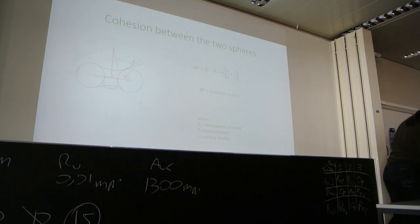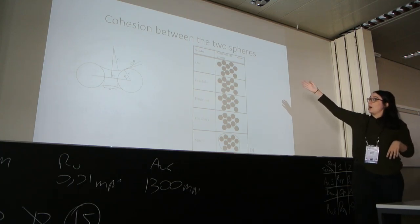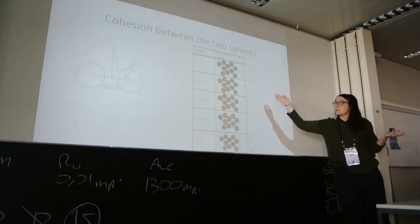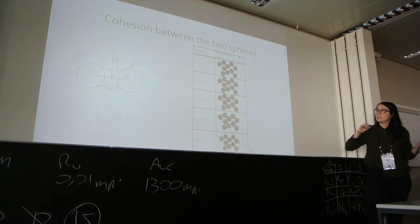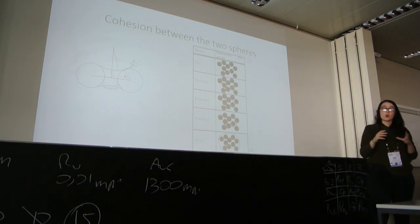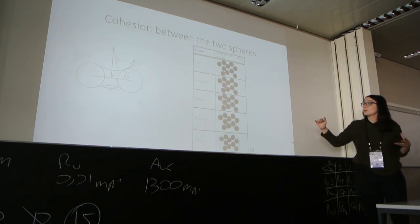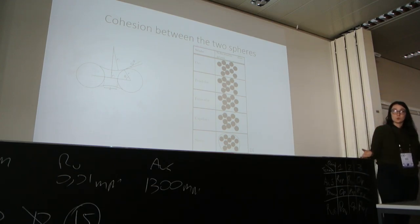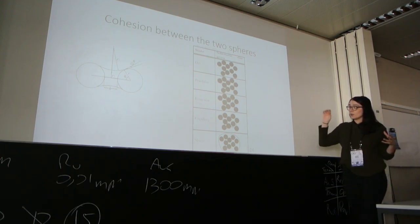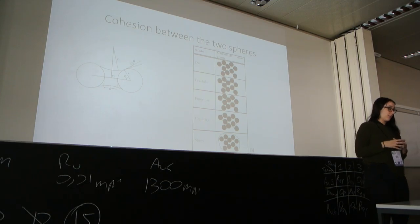These cohesive bridges occur at different water concentrations. With a dry sand you have no bridges. In the pendular state you have bridges just forming, so you have some cohesive forces. In the funicular state some bridges have merged together — again, increasing cohesive forces. The capillary state is where all bridges have merged into one, giving the highest strength. A slurry means you've lost it all — too much water and no more bonds.